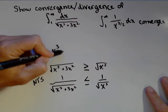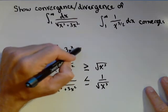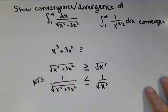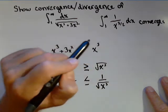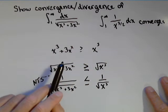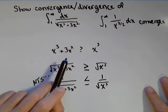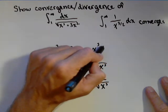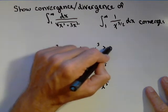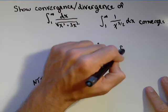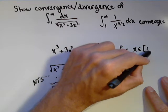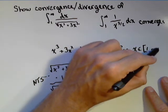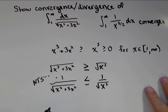So, x cubed plus three x squared. Remember that we're only dealing from one to infinity, so only positive inputs, is greater than or equal to x cubed. So, what we've gotten back to is a pretty obvious statement. So, it's greater than x cubed, which is greater than or equal to zero for x in one to infinity, which is all we need to check, because that's the interval of our function.